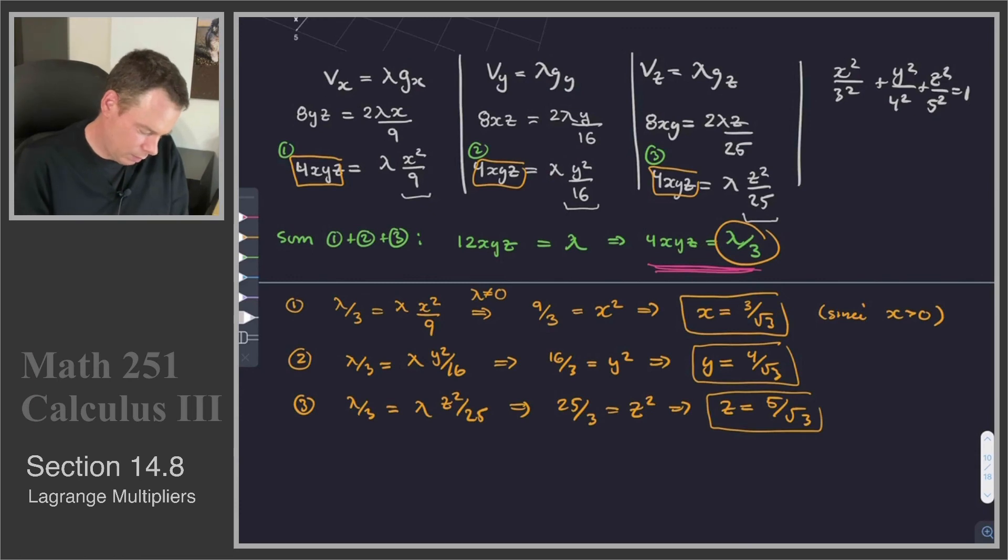And so what we have is that therefore, (x, y, z) = (3/√3, 4/√3, 5/√3).